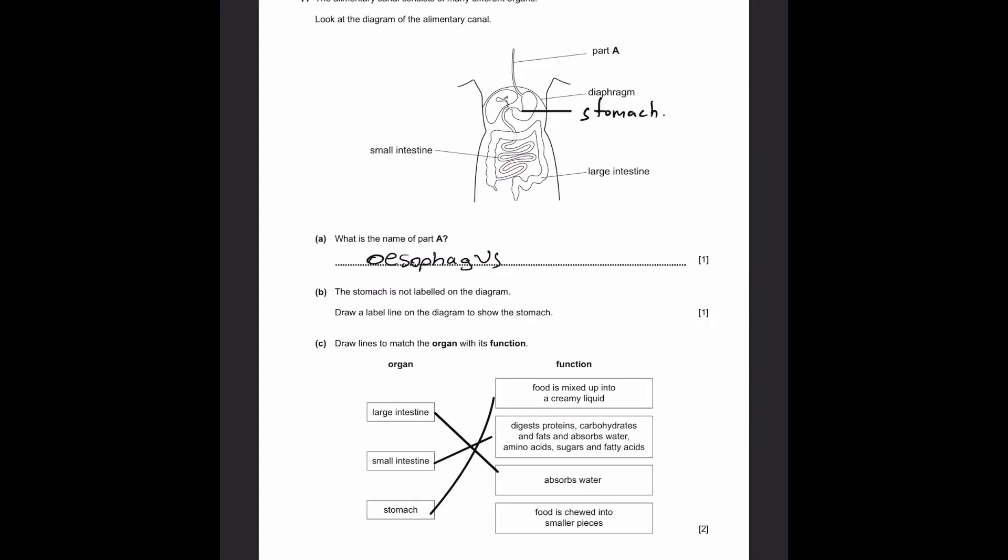Part B. The stomach is not labeled on the diagram. Draw a label line to show the stomach. Stomach is this structure right here which somewhat looks like a kidney bean. We need to draw a label line touching the part of the stomach and write the name there.